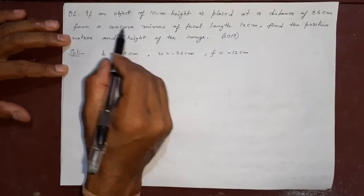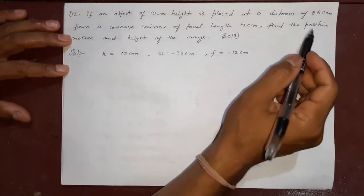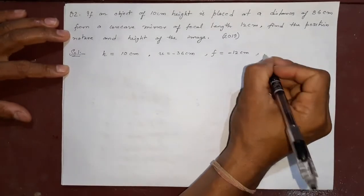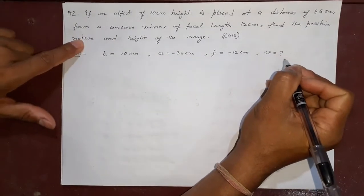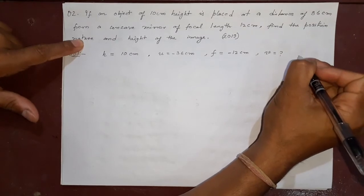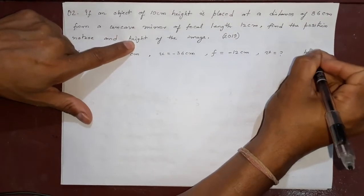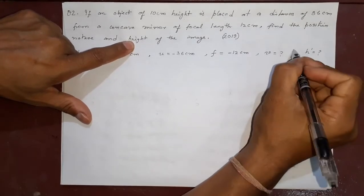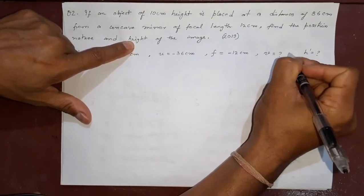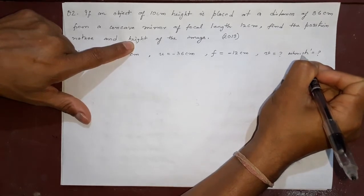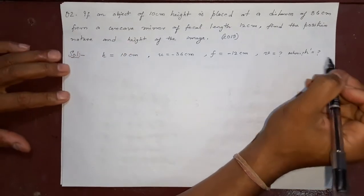Find the position, nature. Position means find what is v. What is nature? Nature means either it is real inverted or virtual erect. Height means find h dash. There are three questions. Remember, you are asked what is the nature and what is the height. So three things we will be finding.